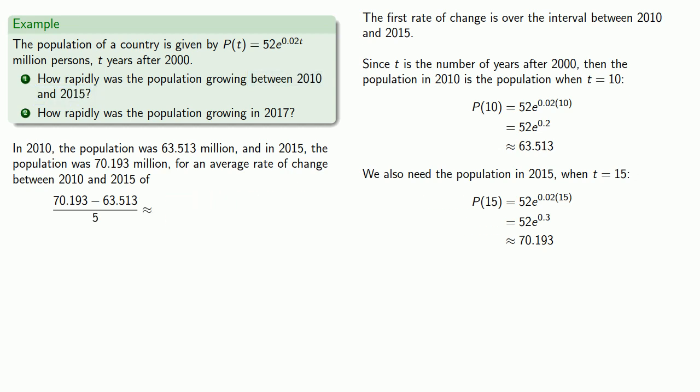The numerical value is 1.336. However, the number without units is meaningless. Both numerator values are measured in millions of persons, while the 5 in the denominator is a number of years. So the units will be millions of persons per year.